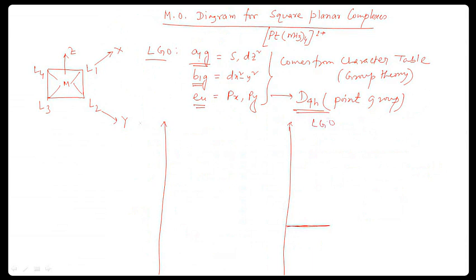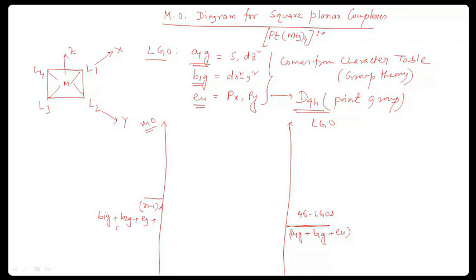We can now consider the metal orbitals. The 4 sigma LGOs are A1G plus B1G plus EU. And here are the metal orbitals: n-1d, that means B1G plus B2G plus EG; and n-s, which means A1G; then n-p, which means A2U plus EG.